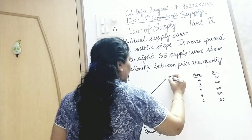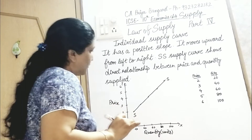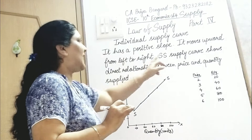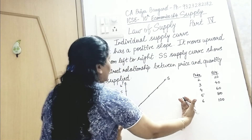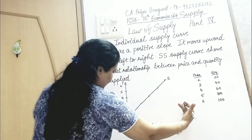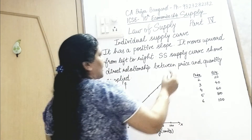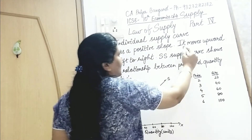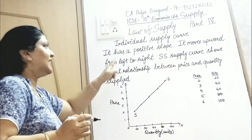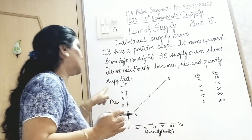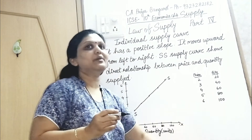This is your SS supply curve. The supply curve is moving upward from left to right — that is why it has a positive slope. The SS supply curve shows a direct relationship between price and quantity supplied: when price is increasing, quantity supplied is also increasing.